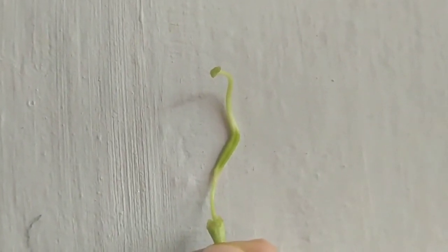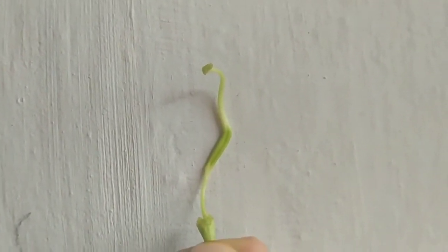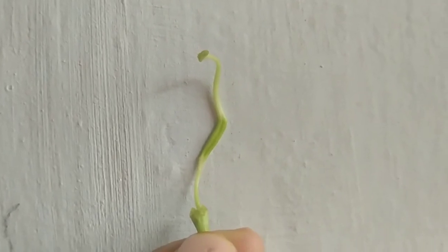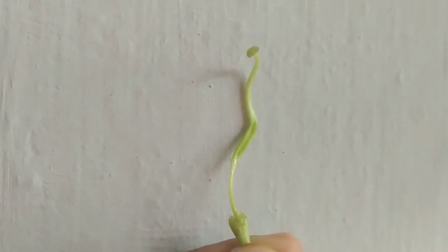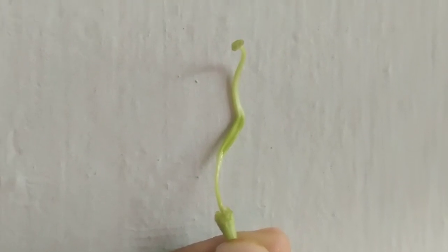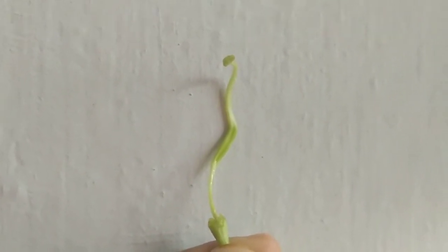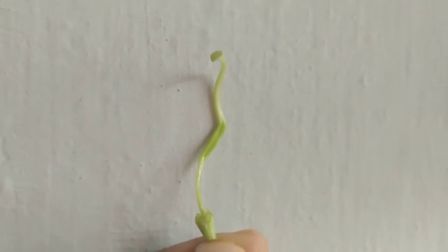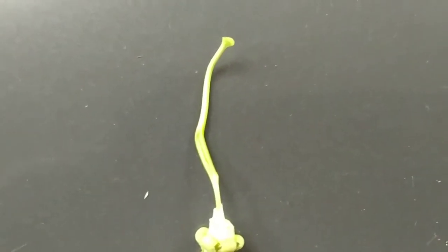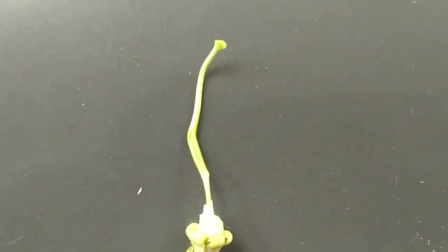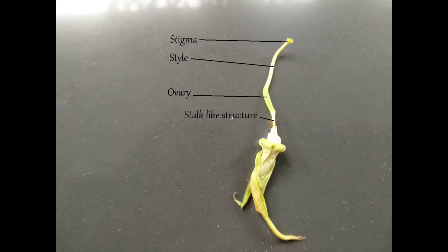Then we have the gynoecium. The gynoecium consists of an ovary, style, and stigma. This is the ovary — a stalk-like structure. It is monocarpellary, unilocular, perigynous ovary with marginal placentation.